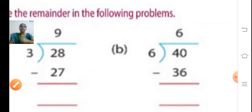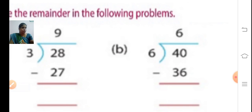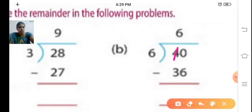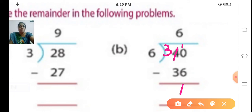Sum B: 40 divided by 6. Will we get 40 in the 6 times table? Six 6s are 36, six 7s are 42 — we cannot take 42 as it is greater than 40. So take six 6s are 36. Subtract: 0 minus 6 — borrow, so 10 minus 6 is 4. So 4 is the remainder. You know how to find the remainder and the quotient.